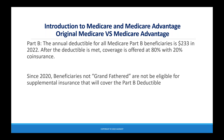For Part B, the annual deductible for all Medicare Part B beneficiaries is $233 in 2022. After the deductible is met, coverage is offered at 80%, with a 20% co-insurance — Medicare pays 80% of the approved amount and the beneficiary is responsible for 20%. Since 2020, beneficiaries not grandfathered in are no longer eligible for supplemental insurance that will cover the Part B deductible; the Part B deductible must always be paid by the patient.